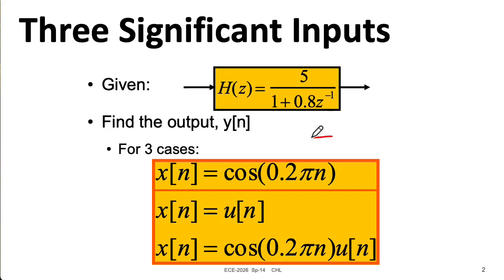In this lecture, we'll focus on this example of a first-order IIR filter. We'll first use the idea of frequency response to figure out what the output is if the input is a forever sinusoid.